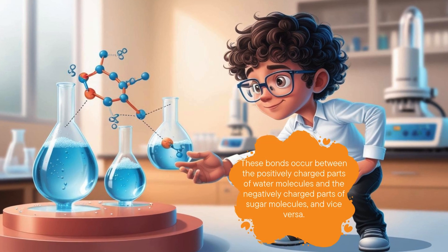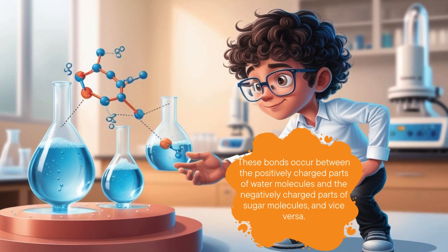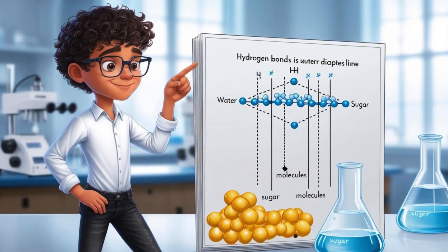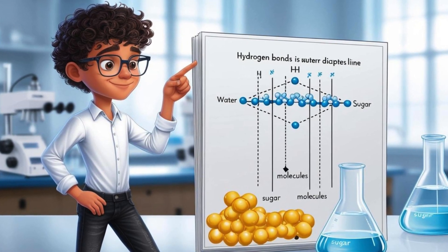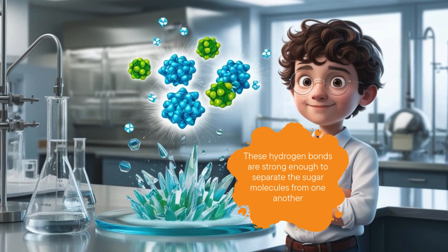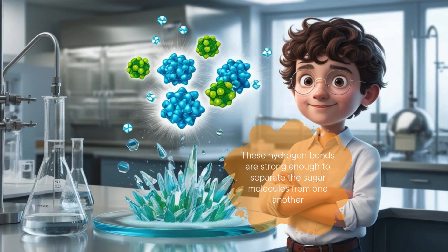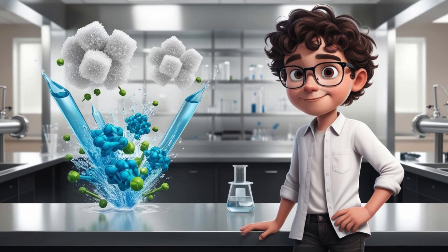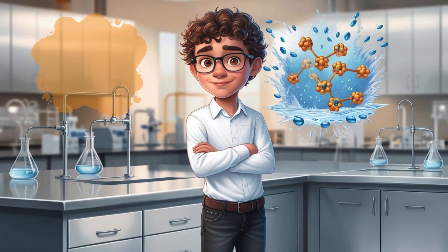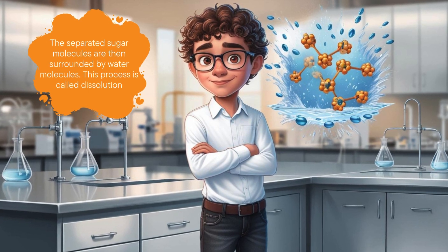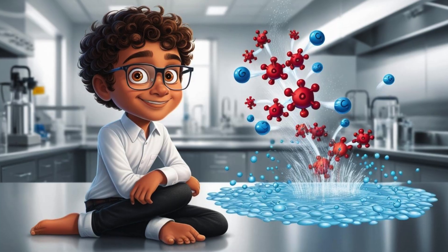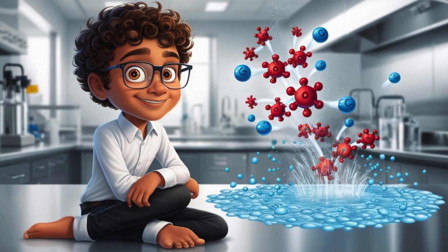These bonds occur between the positively charged parts of water molecules and the negatively charged parts of sugar molecules, and vice versa. These hydrogen bonds are strong enough to separate the sugar molecules from one another. The separated sugar molecules are then surrounded by water molecules.